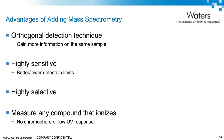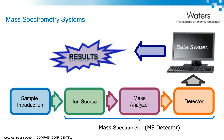A mass spec system can be broken into three major parts: a sample introduction system such as LC; the mass spectrometer itself, which consists of an ion source where the analyte is converted into gas-phase ions, a mass analyzer where ions are separated by their mass-to-charge ratio or m/z values, and a detector where different m/z ratios are detected; and finally a data system which acquires, processes, and generates results from mass spec data. The two topics we are discussing today include the mass analyzer in the case of ion mobility and the entire mass spec system in the case of imaging.